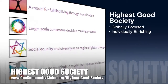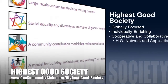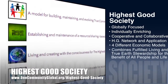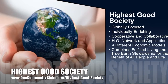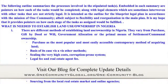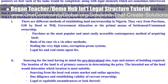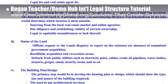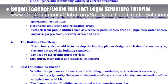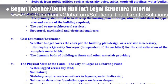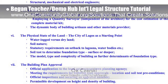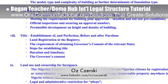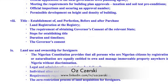One Community's approach to highest good society is globally focused, individually enriching, cooperative and collaborative, includes a highest good network and application, four different economic models, and combines fulfilled living and true earth stewardship for the benefit of all people and all life on this planet. This week the core team began refining information from an international team of legal volunteers working on establishing self-replicating teacher demonstration hubs in their respective countries, with help from India, Kenya, Nigeria, and Malaysia. Oz Chersky, a lawyer specializing in trademark and copyright law, also helped us file for trademarking of all aspects of our project most important to preserve for open source and our global transformation goals.